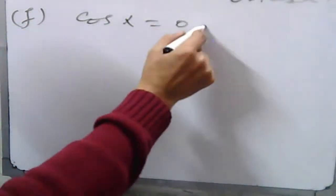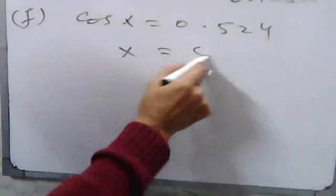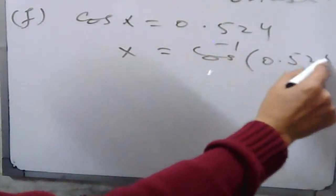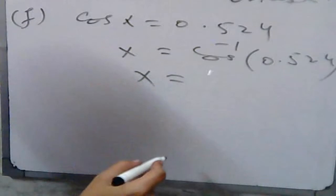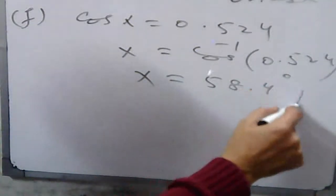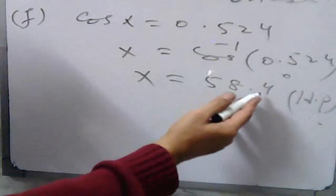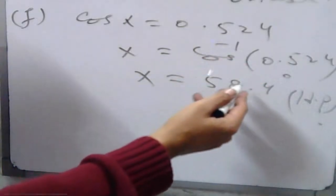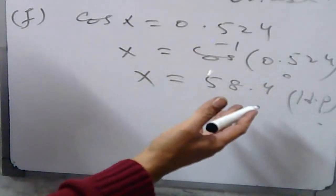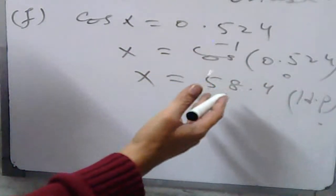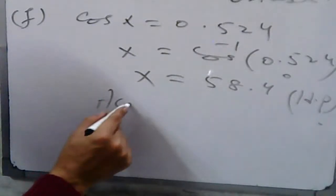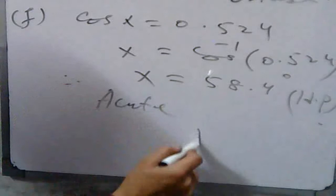In part f, cos x is equal to 0.524. The value of x is 58.4 degrees, up to 1 decimal place. Since cosine is positive, 58.4 is an acute angle. That is your required result.